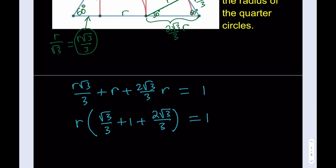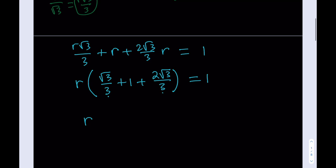Now, this is going to make the calculations easier because these two already have a common denominator. And if I add them, I get 3 root 3 over 3, which is the same as root 3. So, this is going to turn into R times root 3 plus 1 is equal to 1.